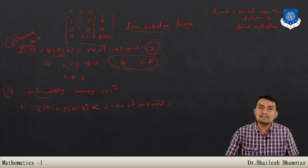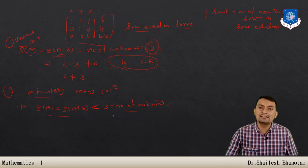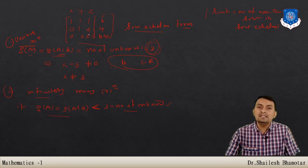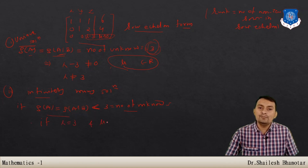For infinitely many solutions, rank(A) = rank(augmented matrix) < number of unknowns. This requires (λ−3) = 0 and (μ−10) = 0, so both rows become zero simultaneously. Setting λ = 3 and μ = 10 gives rank(A) = rank(augmented matrix) = 2, which is less than 3, so the system has infinitely many solutions.